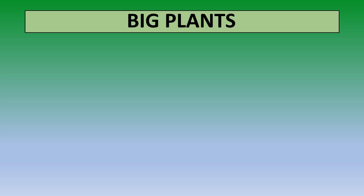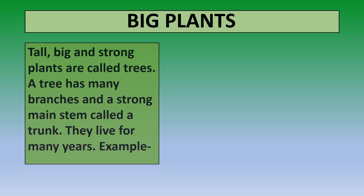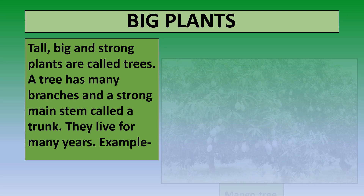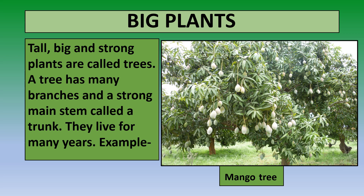Tall, big, and strong plants are called trees. A tree has many branches and a strong main stem called a trunk. They live for many years. For example, the mango tree — it is big and strong.